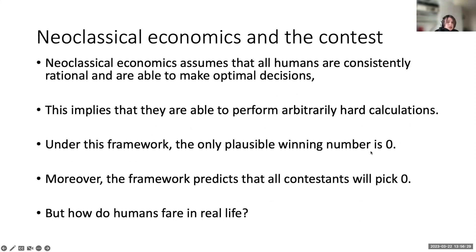Neoclassical economics assumes all humans are consistently rational and able to make optimal decisions. Under this framework, we'd expect them to perform arbitrarily hard calculations. As a consequence, the only plausible winning number is zero — standard economics predicts all contestants will pick zero. But how do humans fare in real life?